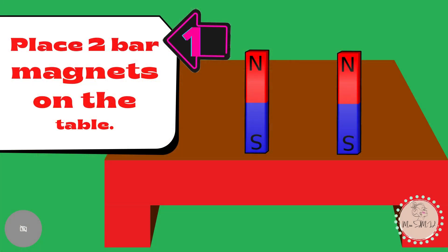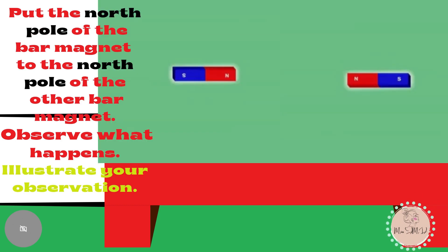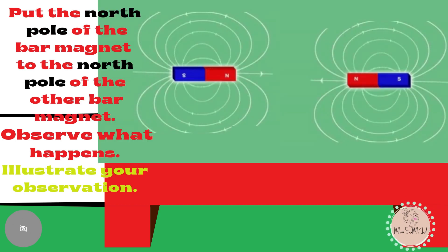Place two bar magnets on the table. Then, put the north pole of the bar magnet to the north pole of the other bar magnet. Observe what happened. Illustrate your observation.